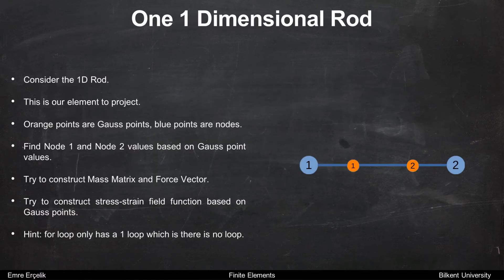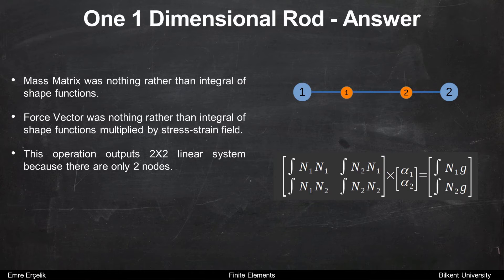In our second example, we will project stress-strain values for a one-dimensional row. Orange points are Gauss points and the blue points are nodes. Find the node 1 and node 2 values based on Gauss point values. You should try to construct the mass matrix and force load vector. Hint: the for loop has only one loop — meaning there is no loop. We only calculate one matrix and we're done. The mass matrix is nothing other than an integral of shape functions. This operation outputs a 2x2 linear system because there are only two nodes.